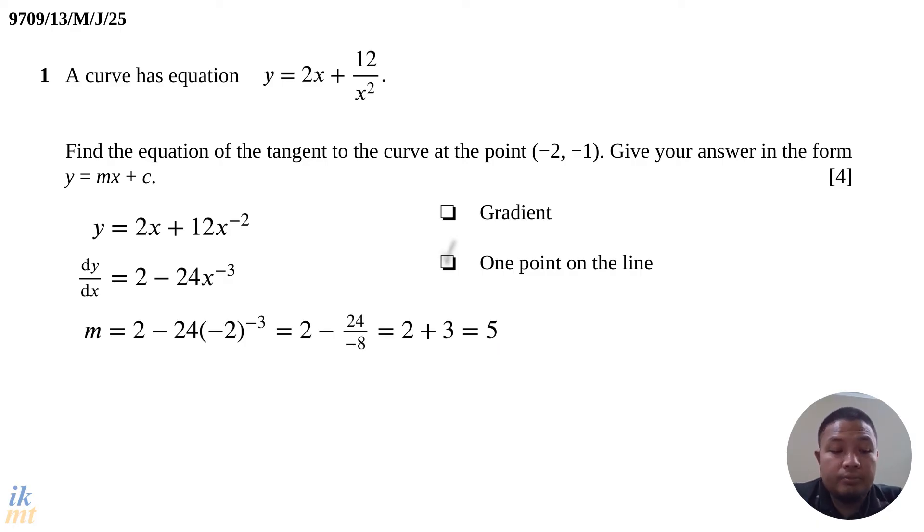And so now we will have both pieces of information. Gradient is known. One point on the line is known. They ask us to write in y = mx + c, so we'll do that. We'll substitute the information that we already have, which is the gradient, represented by m there. So we have y = 5x + c. One more thing we need to find. We need to find this value of c here.